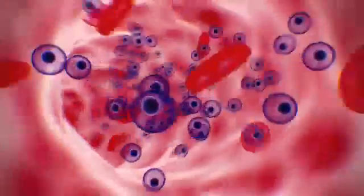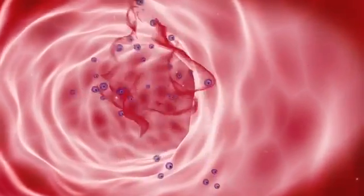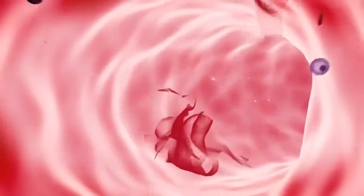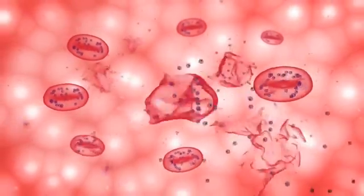They then infect healthy red blood cells, reproducing and eventually rupturing the cell, liberating more merozoites, which in turn go on to infect other cells, leading to the massive destruction of red blood cells.